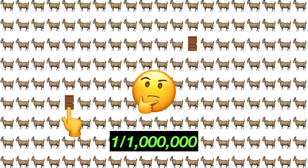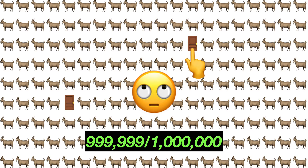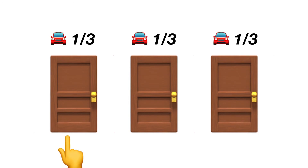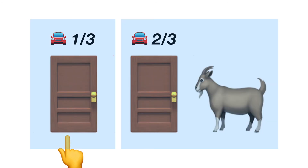Switching doors in the one million door scenario now gives you a 999,999 out of one million chance to win that car — way over 99%. Now going back to the three door problem, you initially have a one-third chance of choosing correctly, and because of the reveal you are now given a choice to choose the option that gives you a two-thirds chance of winning. It's just much harder to see in a three door scenario. With this in mind, switching doors becomes a no-brainer.